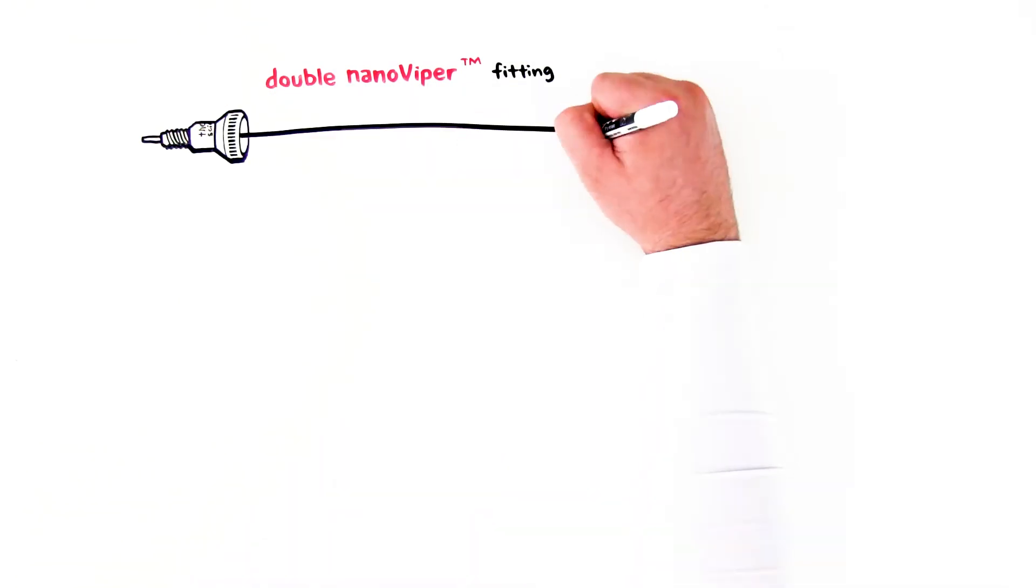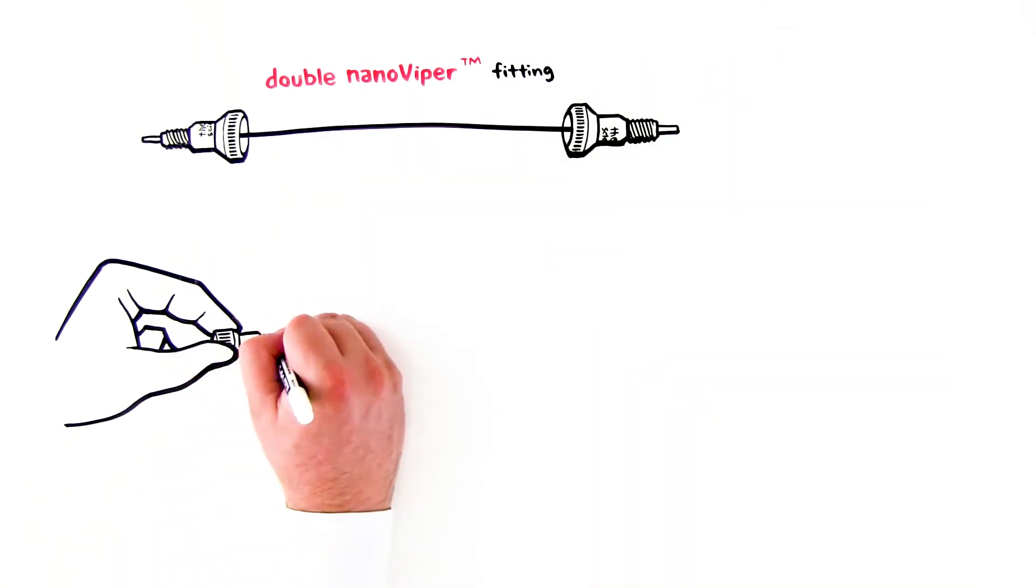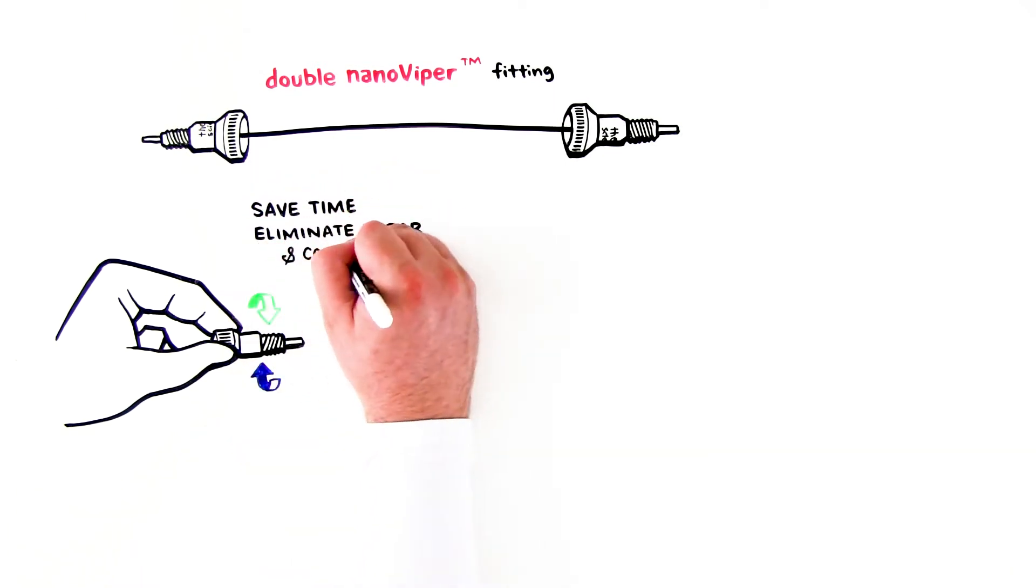Now, let's look at the Double Nano Viper columns. These columns have a Nano Viper finger-tight fitting system at each end – connections that save time and eliminate error and column damage.